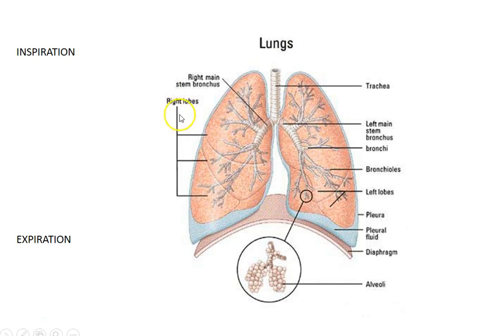Luckily, your lungs are somewhat separated, so if one collapses, you still have the other. Treatment involves putting in a tube to reinitiate intrapleural pressure, restoring the difference between atmospheric and intrapleural pressure so the lung can re-expand.